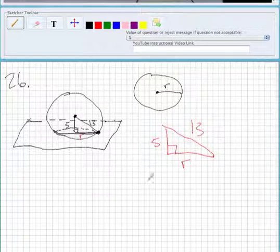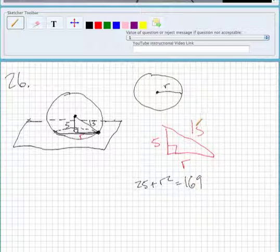So what we want to do is use the Pythagorean theorem. So it's 25, which is 5 squared, plus r squared equals 169, and that's 13 squared. And I subtract 25 from both sides, so r squared equals 144. So r is going to equal 12.